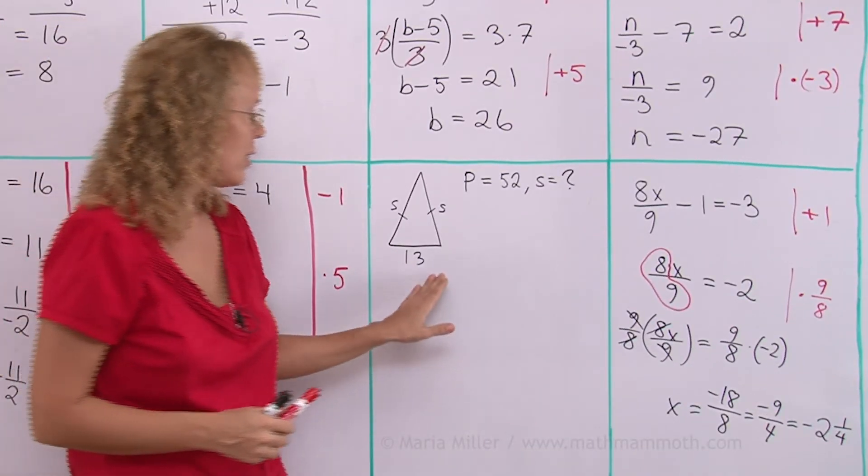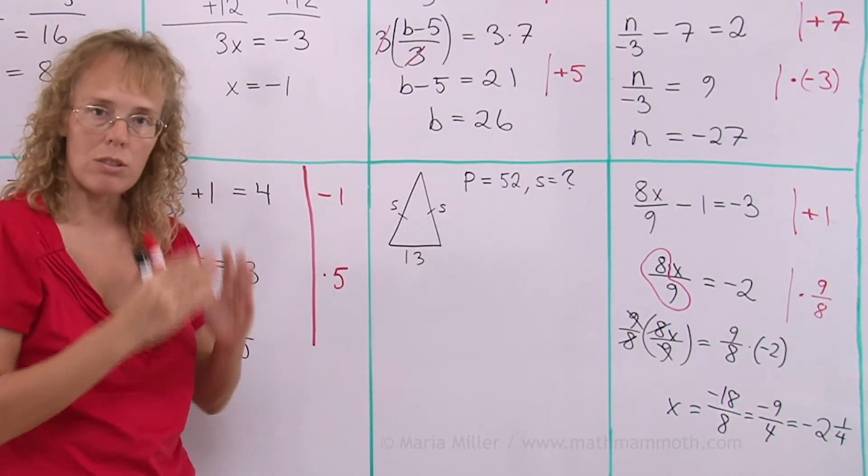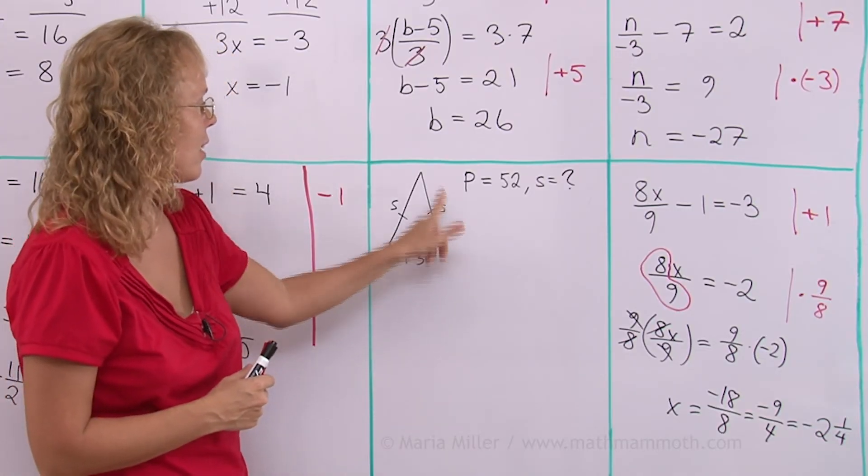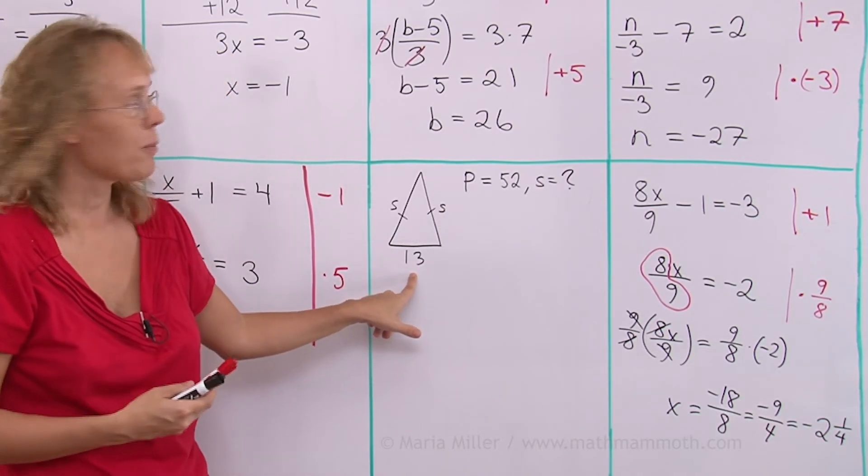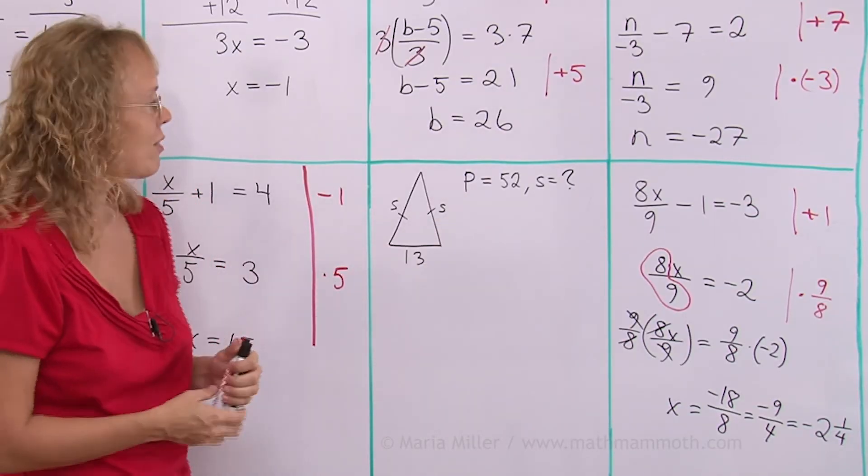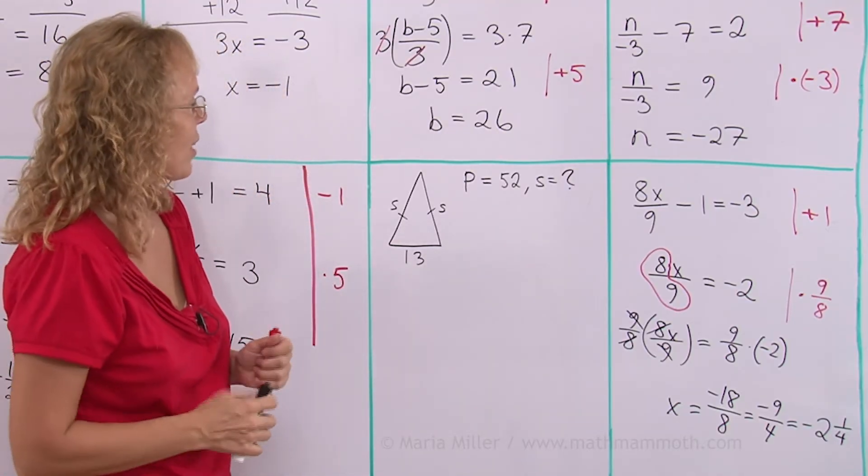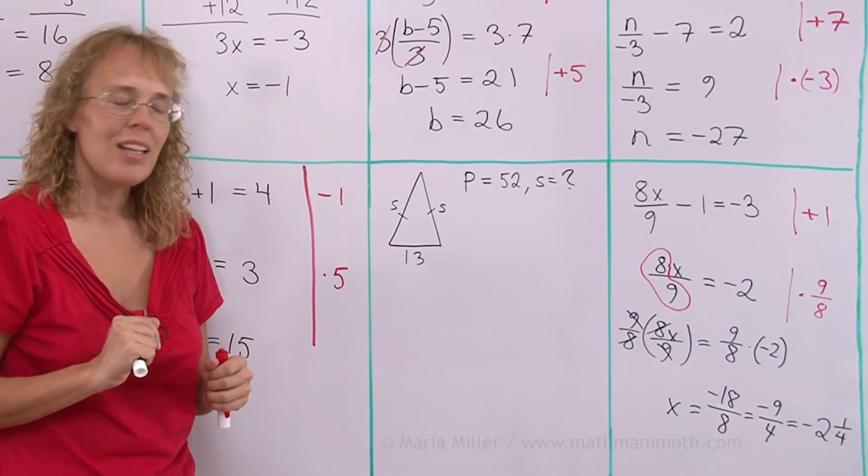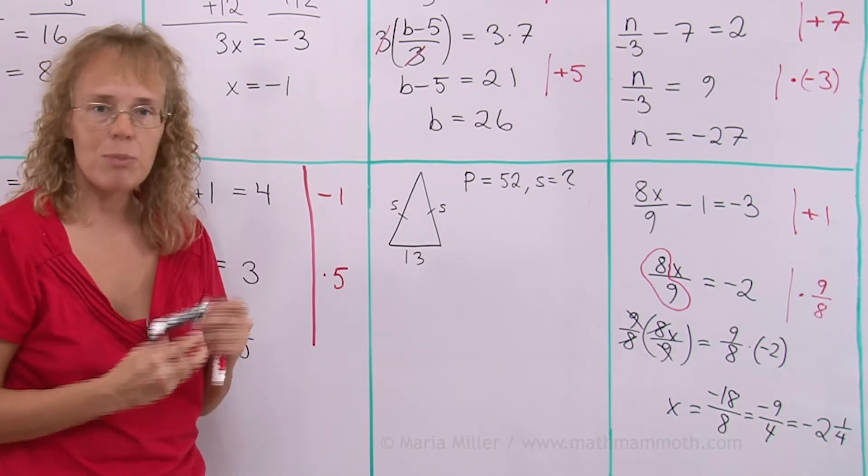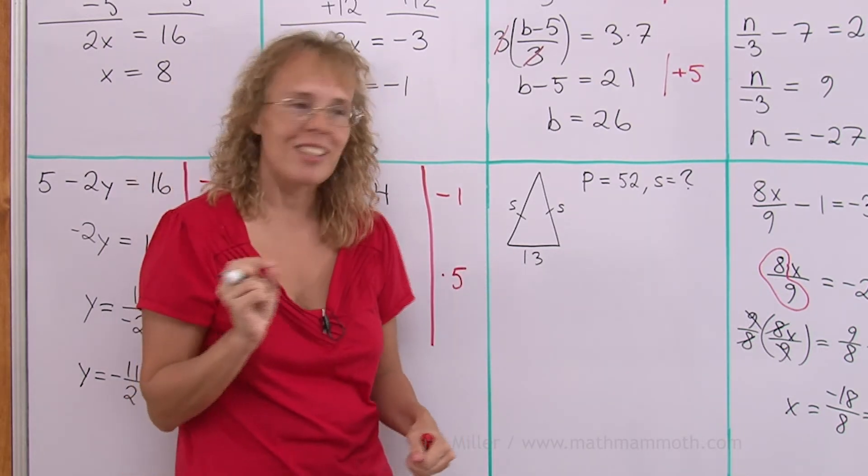Now lastly, this geometry problem here is a triangle. This little marks mean that those two sides are congruent. So it is an isosceles triangle. This side and this side are equal, congruent. And this side is 13 units. P equals 52 means the perimeter is 52. S is unknown. We need to solve that. And I'm sure you can solve it without using algebra. But let's practice writing equations and understanding how that process goes. Before I do the equation, I will also draw you a bar diagram.